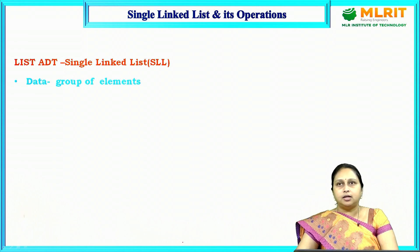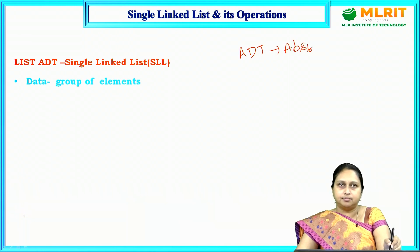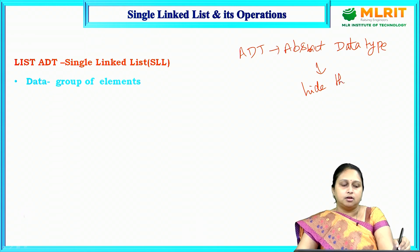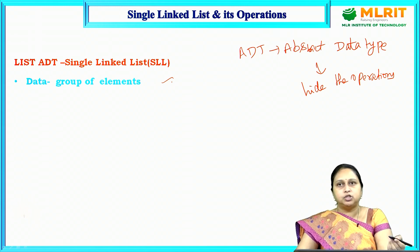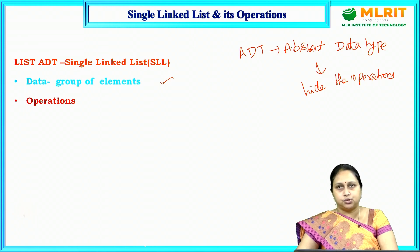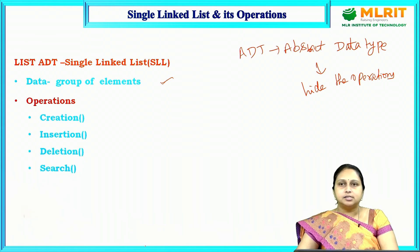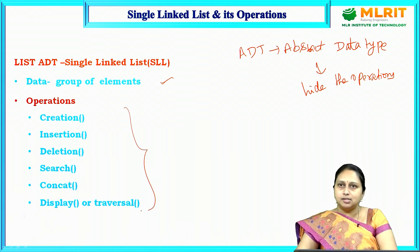Now we will see the different operations of the single linked list. We have already discussed what an ADT is — ADT stands for Abstract Data Type, where you hide the operations. In the List ADT, it consists of data as well as operations. The data is the group of elements you want to store in your linked list.